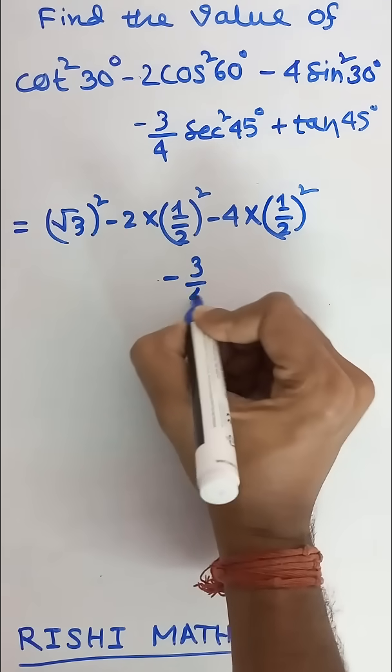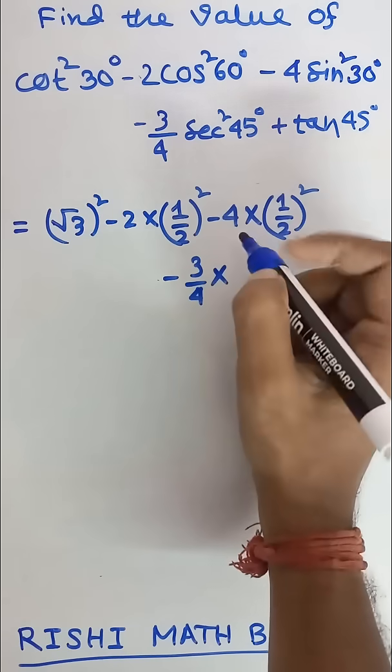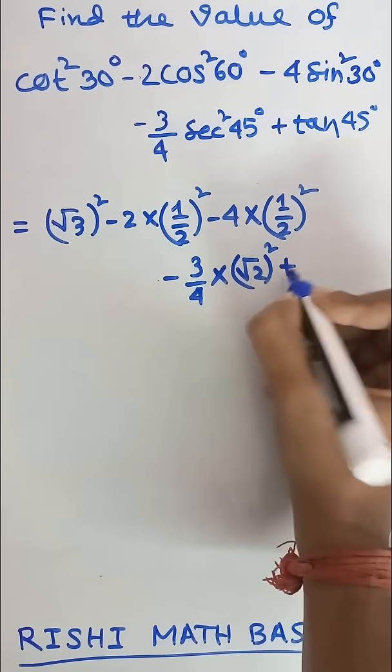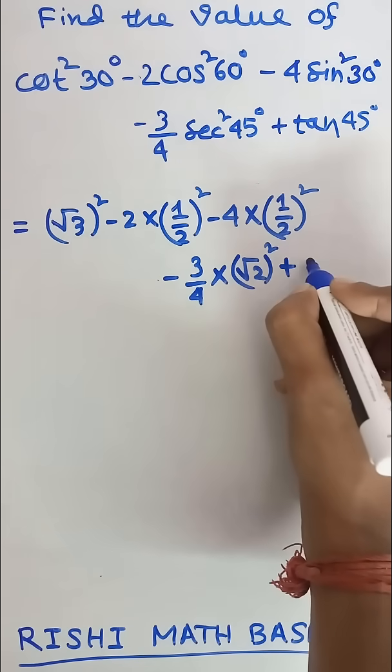Minus 3 by 4 into the value of sec square 45 degree is root 2 whole square plus the value of tan 45 degree is 1.